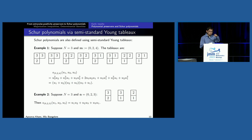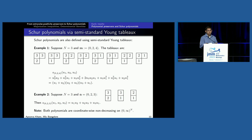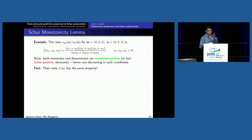The claim is that the ratio of two such Schur polynomials, which doesn't need to factorize, has the same non-decreasing property. If you look at the ratio, you get some symmetric rational function — both numerator and denominator are monomial positive (in fact Schur positive), so they are non-decreasing. The interesting thing is that their ratio has the same property and this was not previously known. This goes through not just for three variables and specific powers, but for every pair of integer tuples where the numerator tuple dominates over the denominator one.